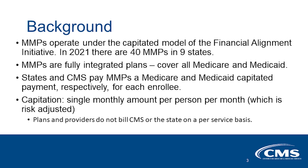In 2021, there are 40 MMPs operating in nine states under the capitated model of the Financial Alignment Initiative. MMPs are fully integrated plans, meaning all or almost all Medicare and Medicaid services are provided by the MMP. At the beginning of each month, states and CMS pay MMPs a Medicare and Medicaid capitated payment, respectively, for each enrollee. By capitation, we mean a single monthly amount per person per month, which is risk-adjusted. Plans do not bill CMS or the state on a per-service basis.